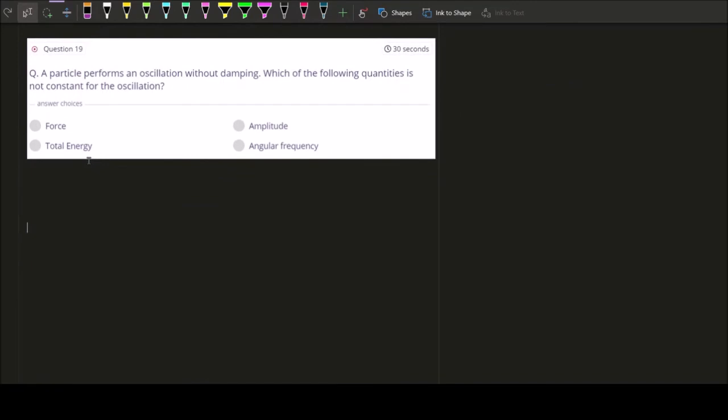So we have question 19. Question 19 says you have a particle and this particle performs an oscillation. In this case we can think of it as SHM. So it's without damping. Well just like our case, the case that we learn there's no damping. So which of the quantities here is not constant for an oscillation. For the oscillation, if there's no damping, thereby there's no energy loss. So what is constant? Well, force is it constant?